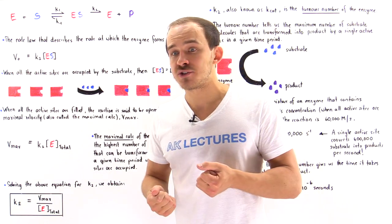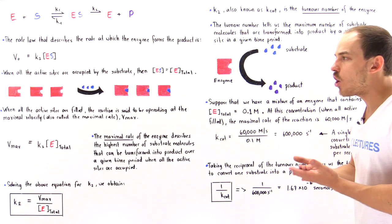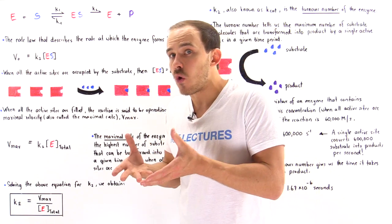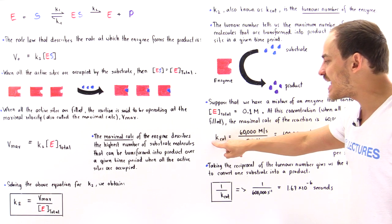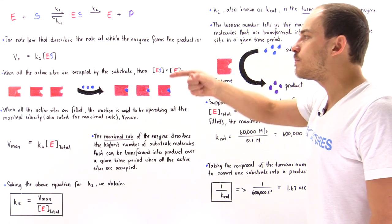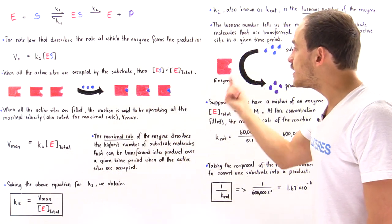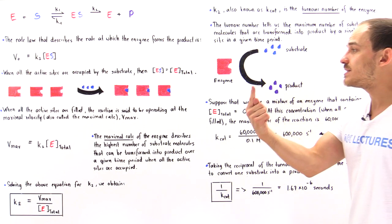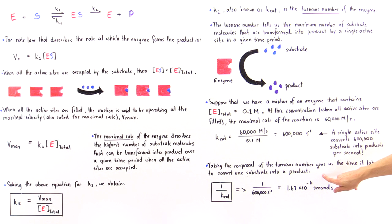All carbonic anhydrase has to do is transform CO₂ molecules produced by cells into bicarbonate so CO₂ can be dissolved and transported in the blood. Finally, if we take the reciprocal of the turnover number — 1 divided by Kcat — that gives us the time period it takes a single active site of a single enzyme to transform a single substrate molecule into a single product.